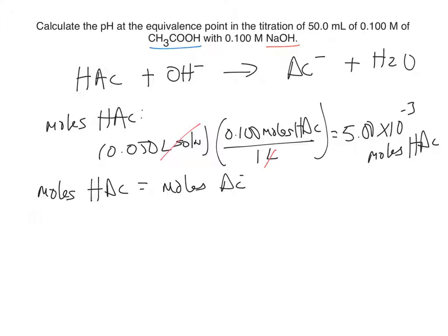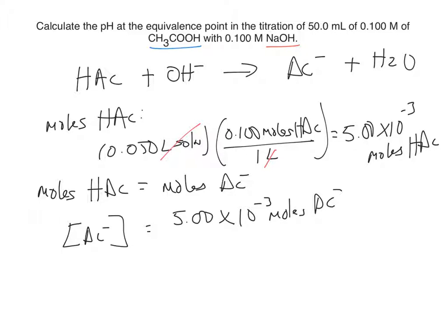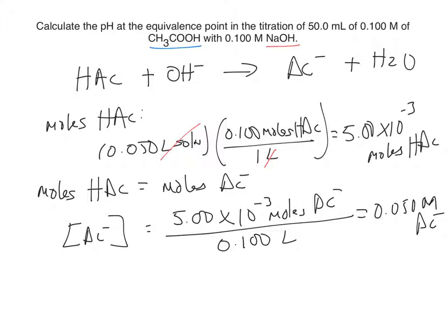The moles of acetic acid are transformed to moles of acetate. So the concentration of acetate at the equivalence point equals 5.00 × 10⁻³ mol of acetate divided by the total volume. We have 50 mL of acetic acid and 50 mL of sodium hydroxide, giving a total volume of 100 mL, or 0.1 L. So the concentration of acetate is 0.050 mol/L.